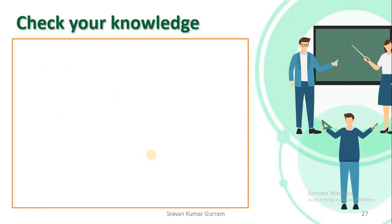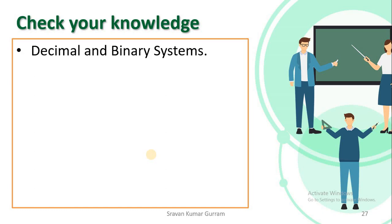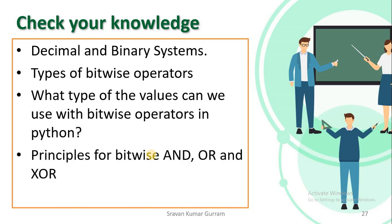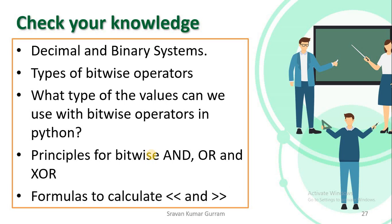Check your knowledge — what have you learned from this video: what is the decimal number system, what is the binary number system, how to convert between number systems, the different types of bitwise operators in Python, what values can be used with bitwise operators, the principles for implementing bitwise AND, OR, and XOR, and the formulas to calculate values using bitwise left shift and right shift operators.